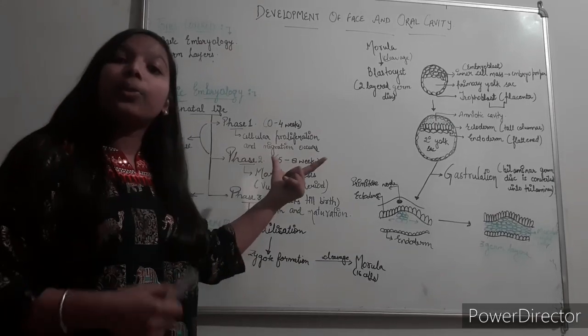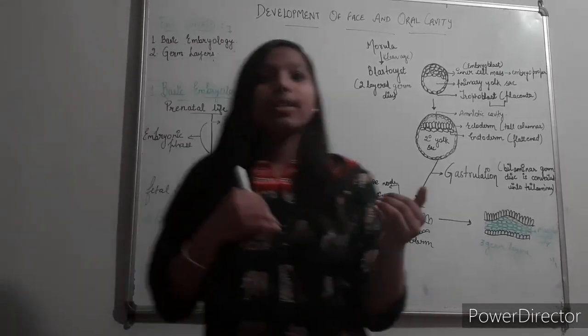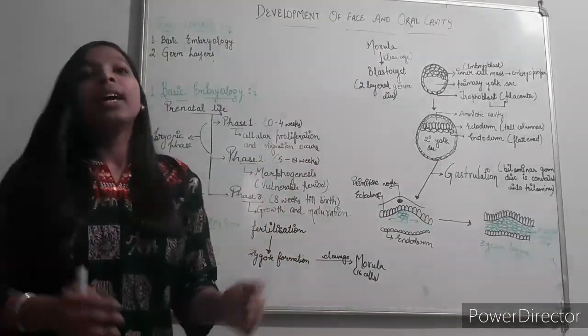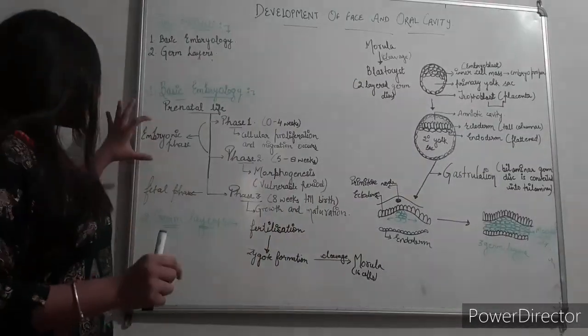Phase two is also known as vulnerable period. It is because if in phase two there is any disturbance at any step, that will lead to an anomaly.